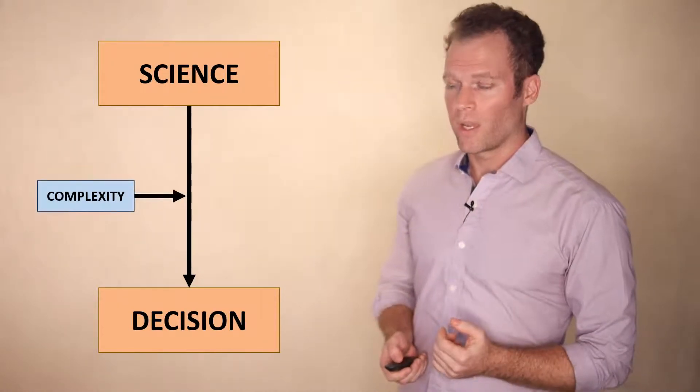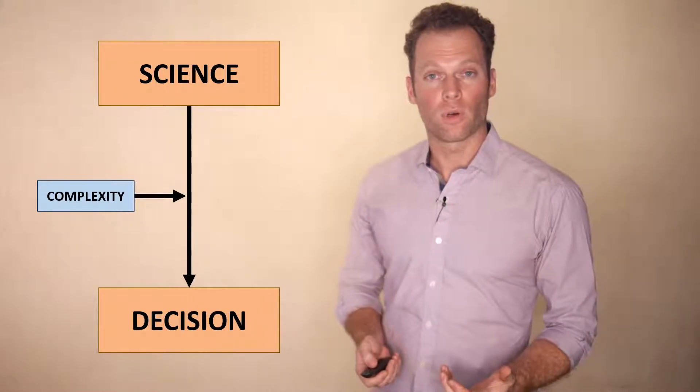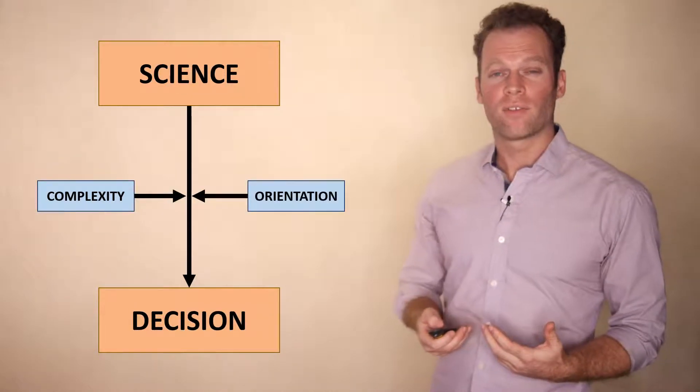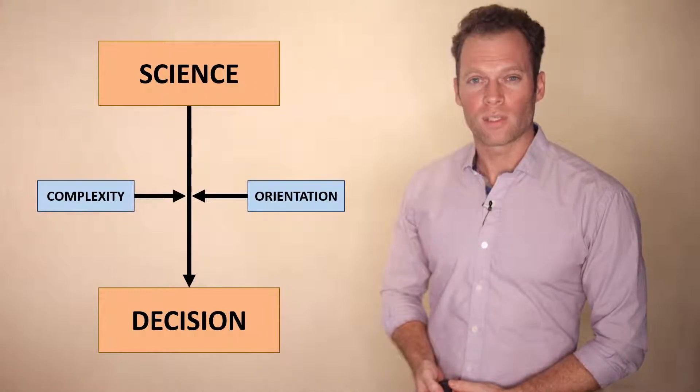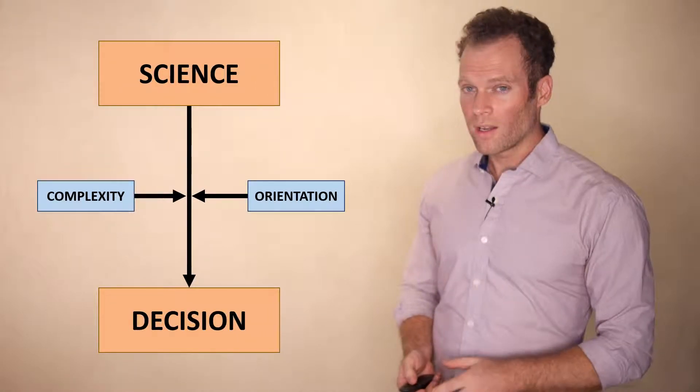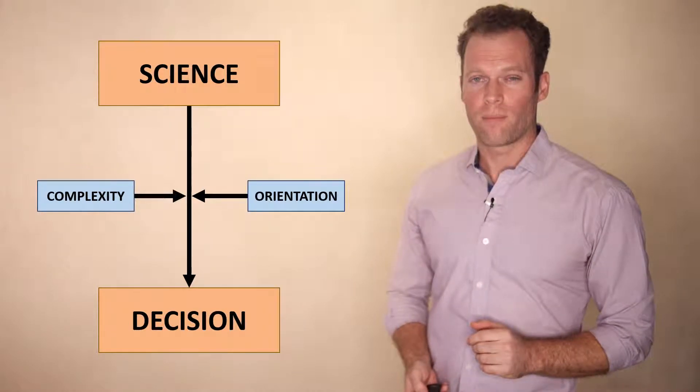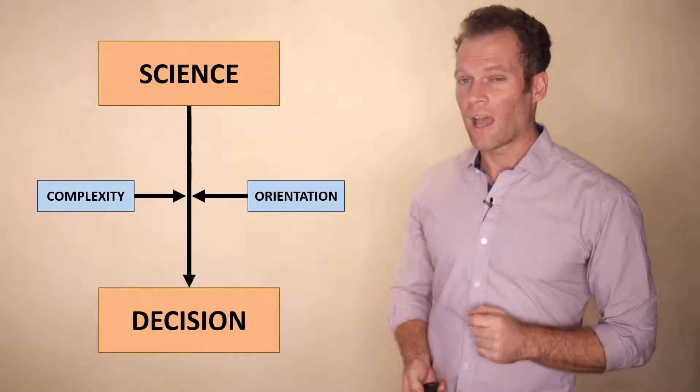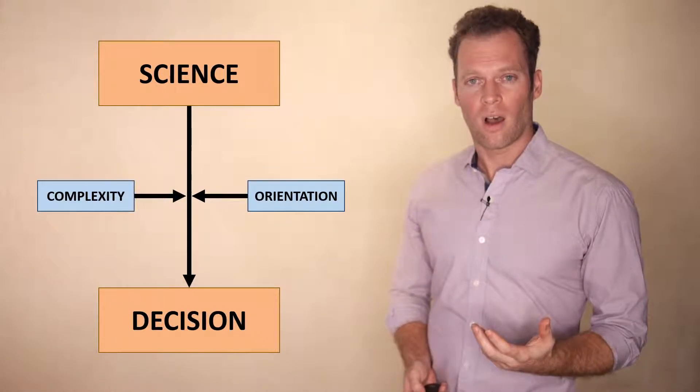For example, when an issue is particularly complex, people have difficulty making decisions, or sometimes people have prior orientations, predispositions based on values, ideology, and so on, that guide their decisions irrespective of scientific information they encounter. And people are especially prone to rely on those prior orientations when they encounter really complex issues.